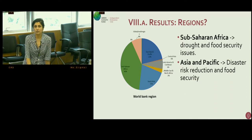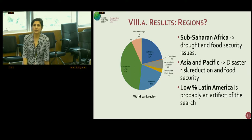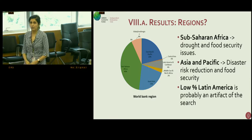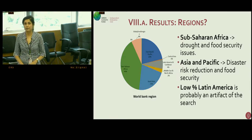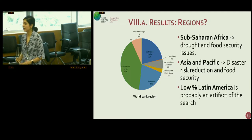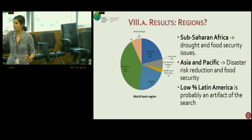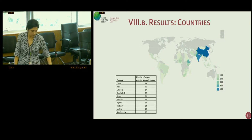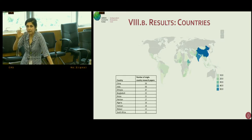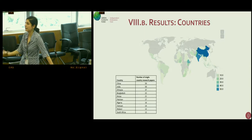In terms of regions where our evidence was distributed, we had ex-ante hypotheses. Sub-Saharan Africa had really good evidence on drought and food security. Asia and Pacific concentrated most of the disaster risk reduction and food security evidence. But in Latin America, we didn't find much — this was another surprise. This also made us go back and look at our search strategy, as the search part took almost 10 months. Country-wise, India, China, Ethiopia, and Bangladesh showed the maximum incidence of high-quality adaptation-related evidence.